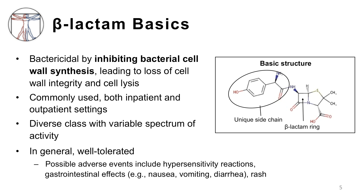Beta-lactams are named after their common central core, the square-shaped beta-lactam ring, as seen in this picture of the basic chemical structure represented here by amoxicillin. Differences in properties between the beta-lactam subclasses, such as spectrum of activity and tolerability, are largely due to unique specific side chains synthetically attached to this core. The beta-lactams are bactericidal by inhibiting bacterial cell wall synthesis, leading to loss of cell wall integrity and eventually cell lysis.